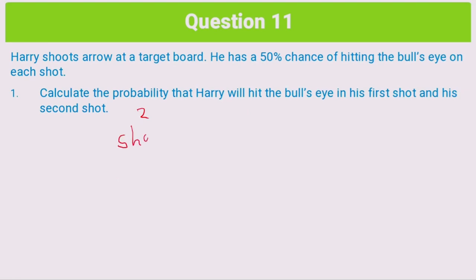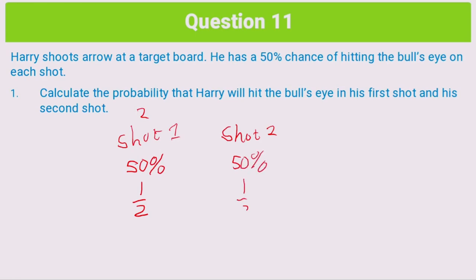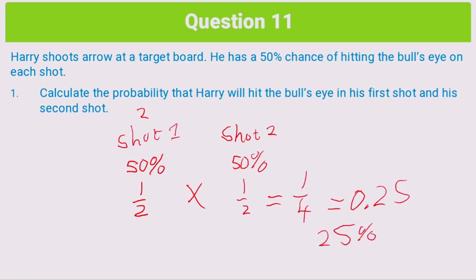For shot 1, he has a 50% chance of hitting the target, so that's a half. On shot 2, he also has a 50% chance, which is also a half. To calculate the probability of him doing both consecutively, we multiply to get a quarter, which is also 0.25. So your answer for question 1 could have been a quarter, 0.25, or 25% — any of those three would have been accepted.